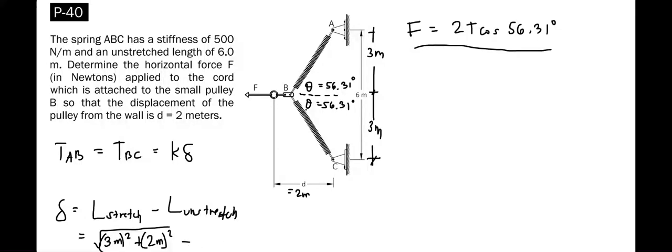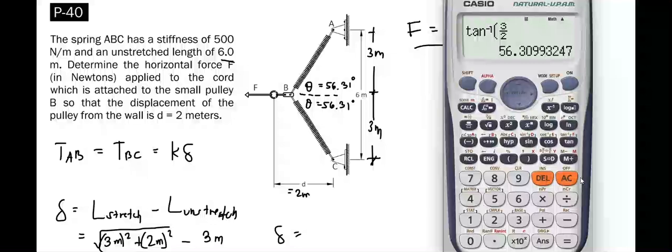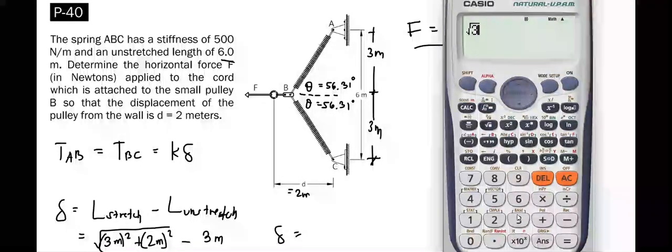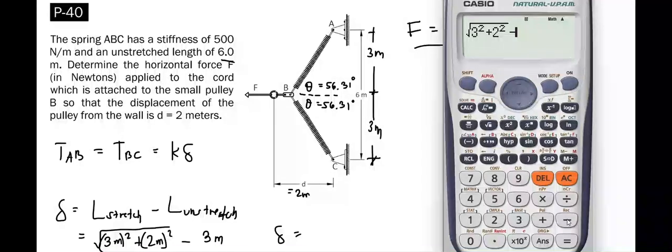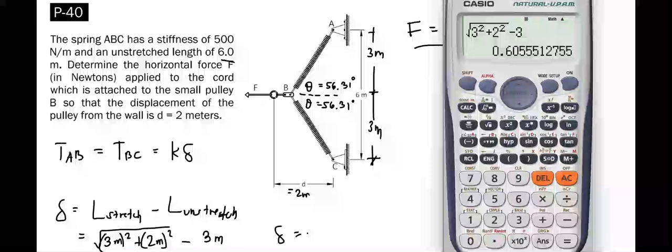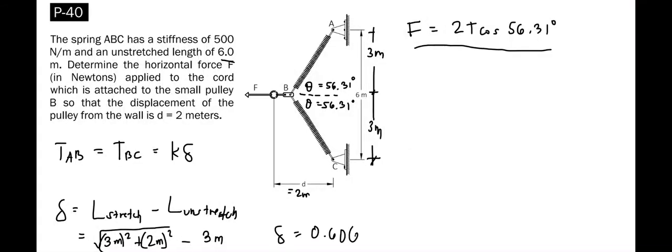Minus the unstretched length of the cable that is given in this problem, half of 6 meters, that is 3 meters, the unstretched length of AB or BC. Now we can solve for delta that is equal to square root of 3 squared plus 2 squared minus 3 meters, equal to 0.606 meters.